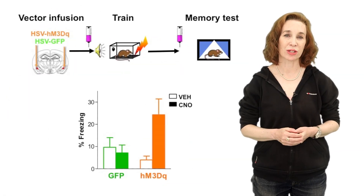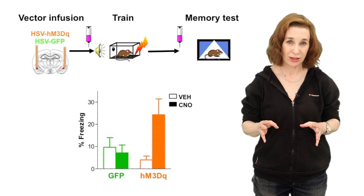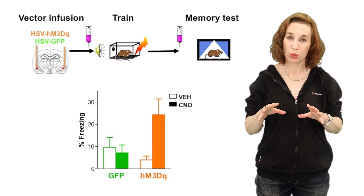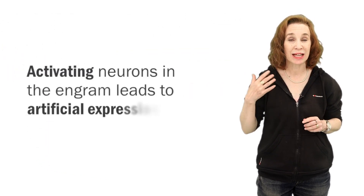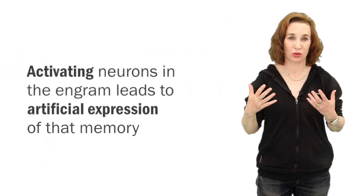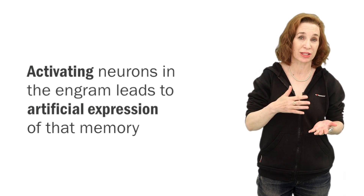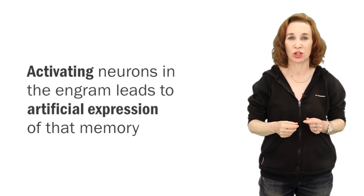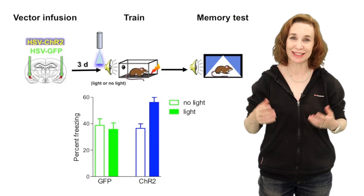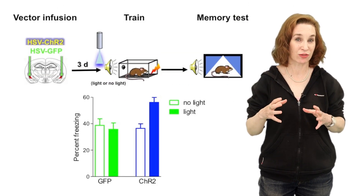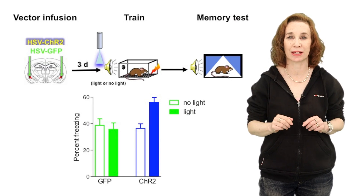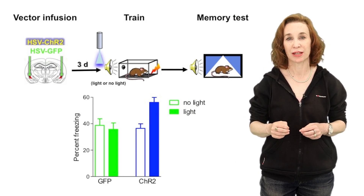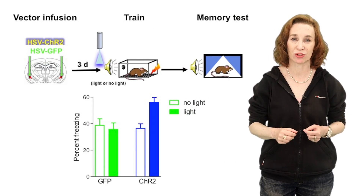How do we know that these neurons are actually part of the memory trace? We used CNO to synthetically activate just these neurons prior to a memory test. Synthetic activation of neurons allocated to a memory trace — those with increased excitability prior to training — served as a sufficient cue for memory retrieval. Finally, we used optogenetic mediators of neuronal excitability to transiently increase excitability in a small portion of LA neurons immediately before training, and found this enhanced memory formation.